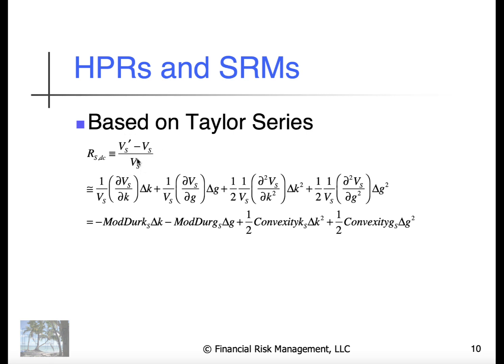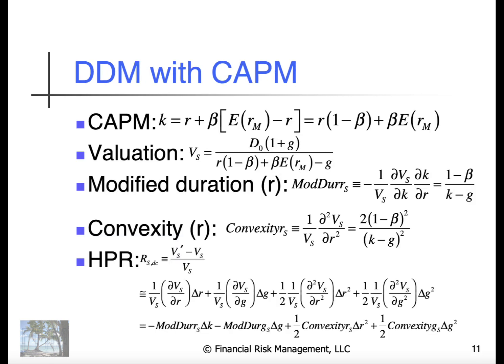I can apply a Taylor series and come to the conclusion that the return discretely compounded can be estimated with modified durations of investors required rate of return and modified duration of growth and apply the same with convexity. I will be able to explain a significant portion of the rate of return of a given stock.